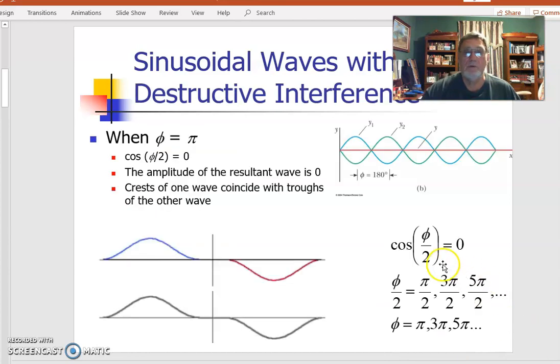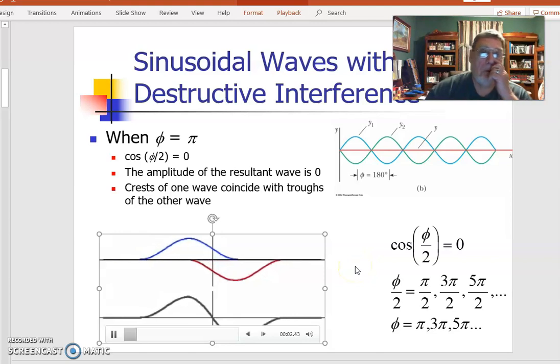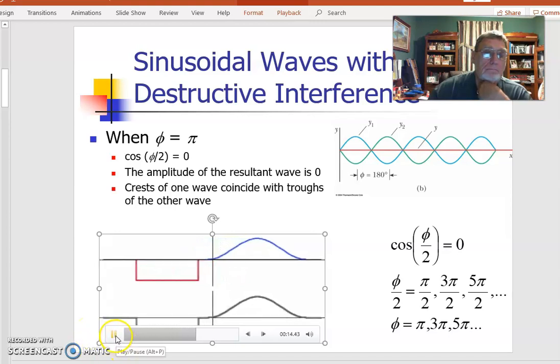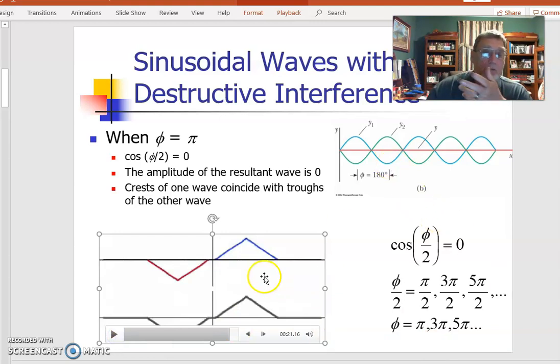Destructive interference is when that phase angle gives me a cosine of half of it gives me 0, which is odd numbers of π. The other one is even numbers. These are odd numbers. When two waves add together to produce a smaller wave, they interfere destructively. The amplitude of the reduced wave can be found by adding the amplitudes of the original waves. Destructive interference occurs whenever the crest of one wave meets the trough of another. So constructive and destructive interference, whether they arrive in pulses or sine waves, whether they both increase the total or decrease the total, depends on the phase difference.